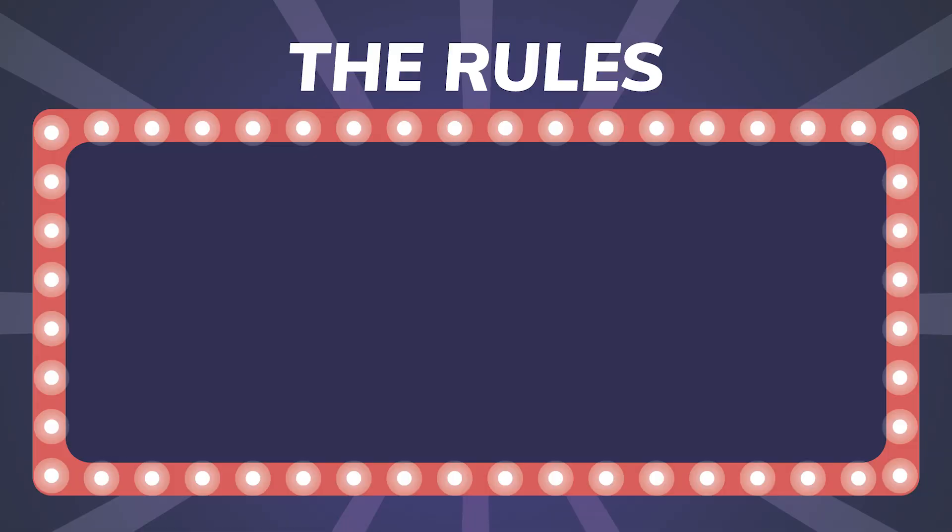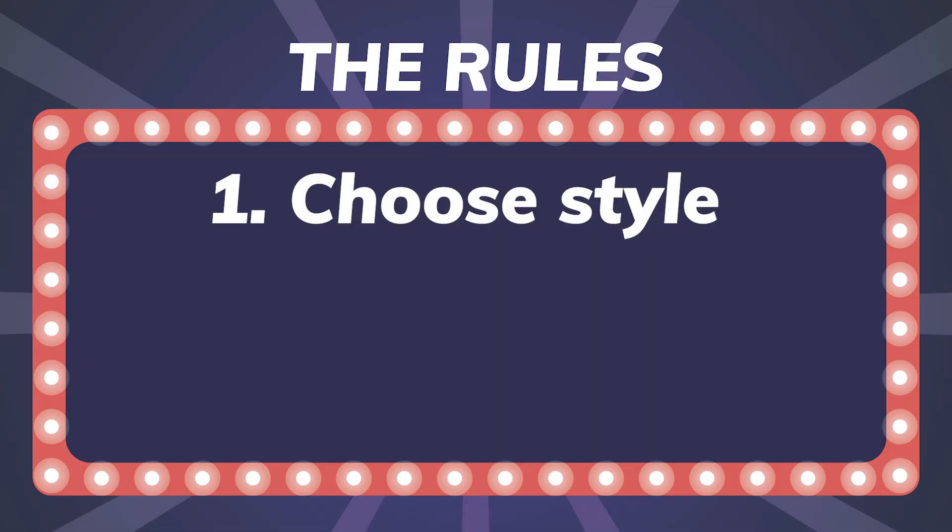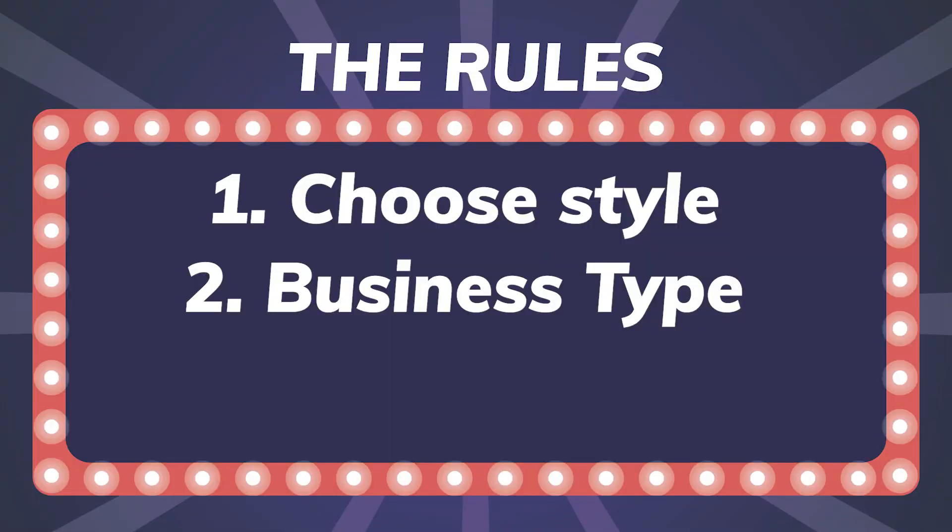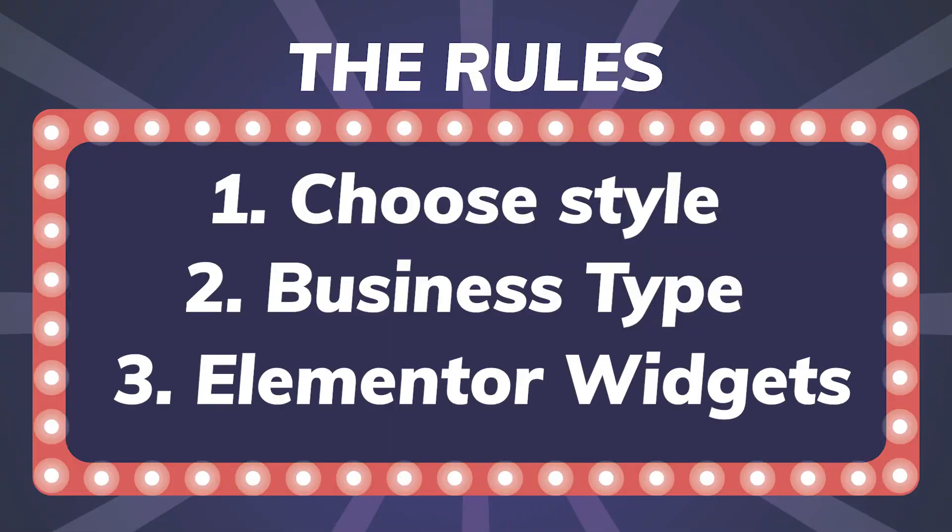These three games of chance will determine the type of website that I am going to create today. Here's how it will work. From one bowl, I will pick a design style. I'm not sure exactly what style I'm going to get because I wrote these down a few days ago. Then the next round, I'm going to pick the type of business. And then the third game of chance, we're going to pick three different Elementor widgets. Like every other project, we're going to be designing this in Elementor Pro, and I have to use three Elementor widgets that I pick on the page in the design.